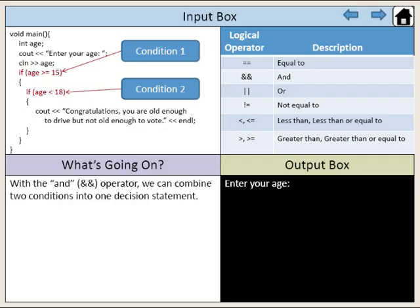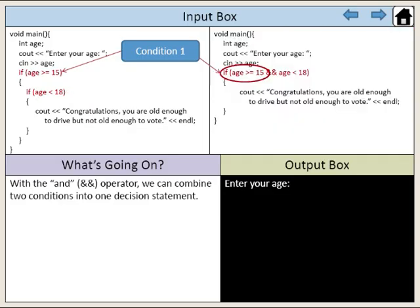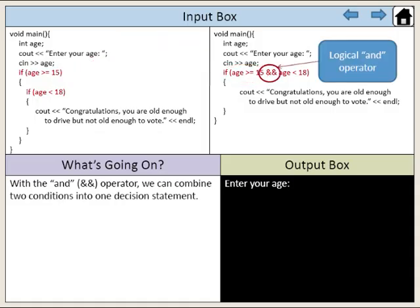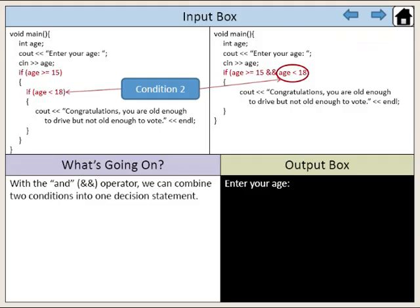The first condition evaluates whether the value of age is greater than or equal to 15. Next, we use the AND operator to combine the second condition. The second condition evaluates if the value of age is less than 18.